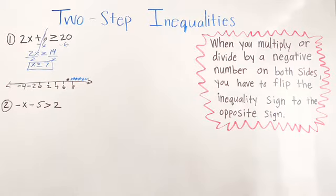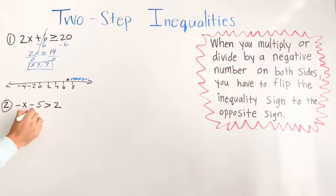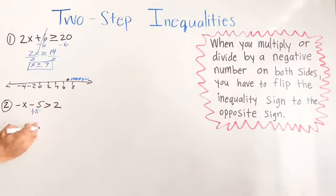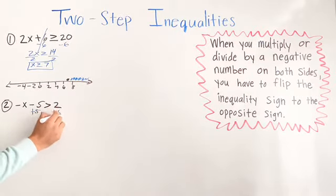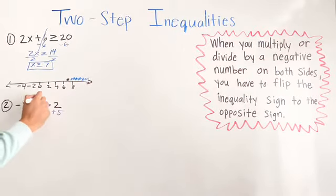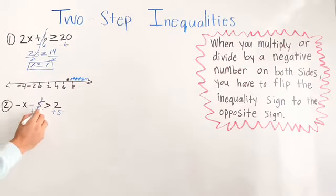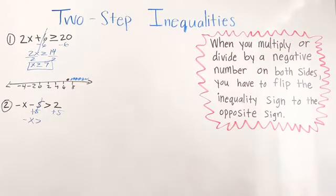For number 2, we have negative 5x minus 5 is greater than 2. So to get rid of negative 5, we do positive 5 — always the opposite — and whatever we do on one side, we also do on the other side. This is going to cancel, and now we have negative x is greater than 7, since we have two of the same signs.